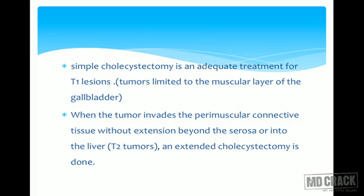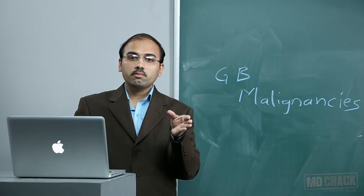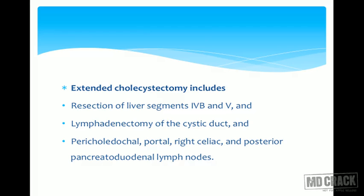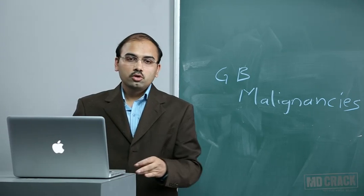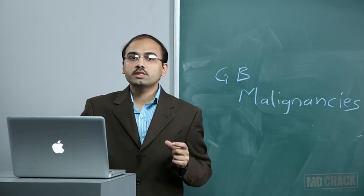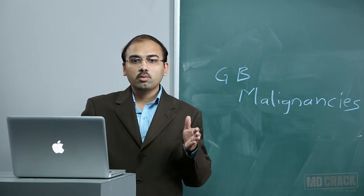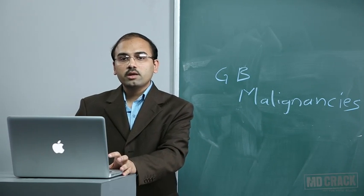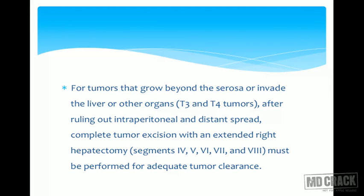T2 tumors involve the perimuscular connective tissue without extension beyond the serosa or into the liver. These require extended cholecystectomy. Extended cholecystectomy includes resection of liver segments 4b and 5 plus lymphadenectomy of the cystic duct along with pericholedochal, portal, right celiac, and posterior pancreaticoduodenal lymph nodes.